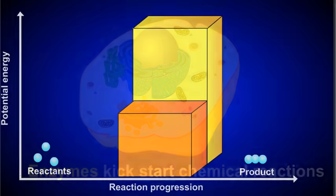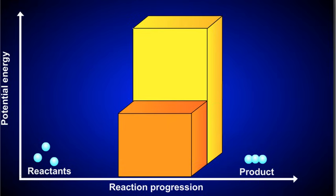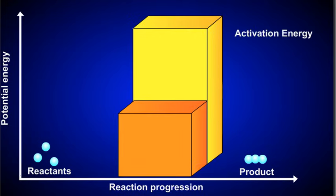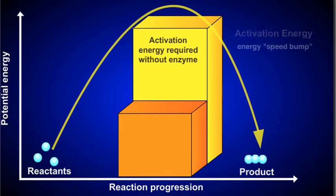This graph illustrates how enzymes speed up chemical reactions. Remember that in a chemical reaction, the reactants interact to form a product. The chemical reactants for this example are shown on the left and the products on the right. The wall that separates them represents the activation energy. You can think of this wall as an energy speed bump — the larger the bump, the slower the reaction.